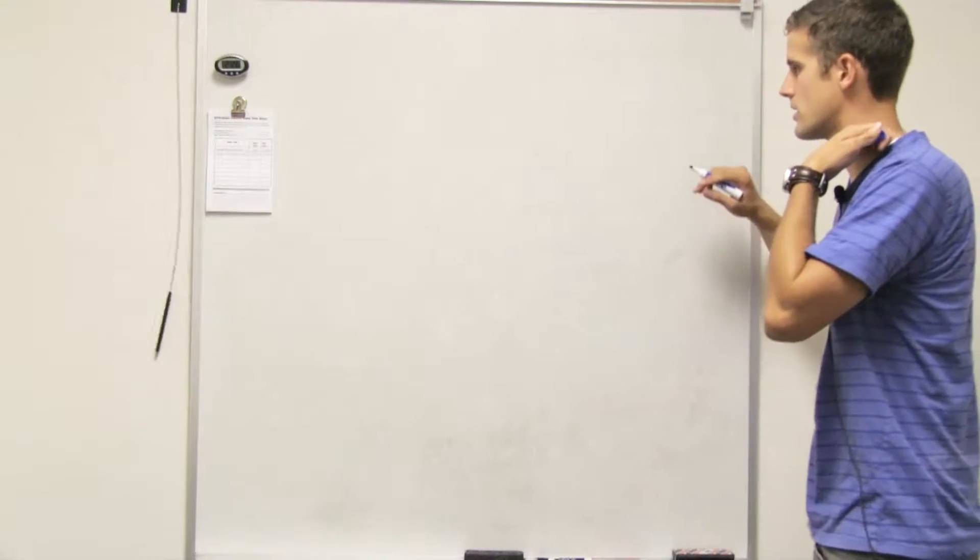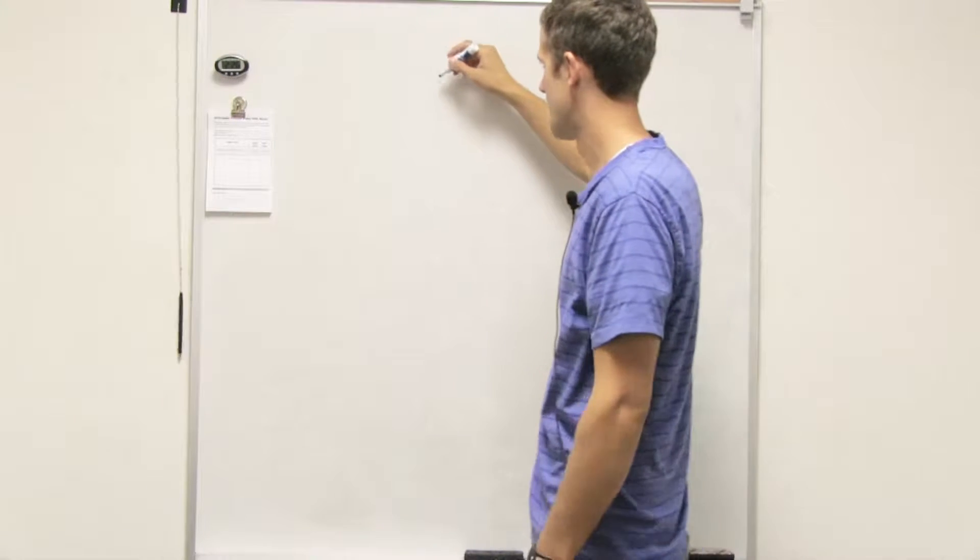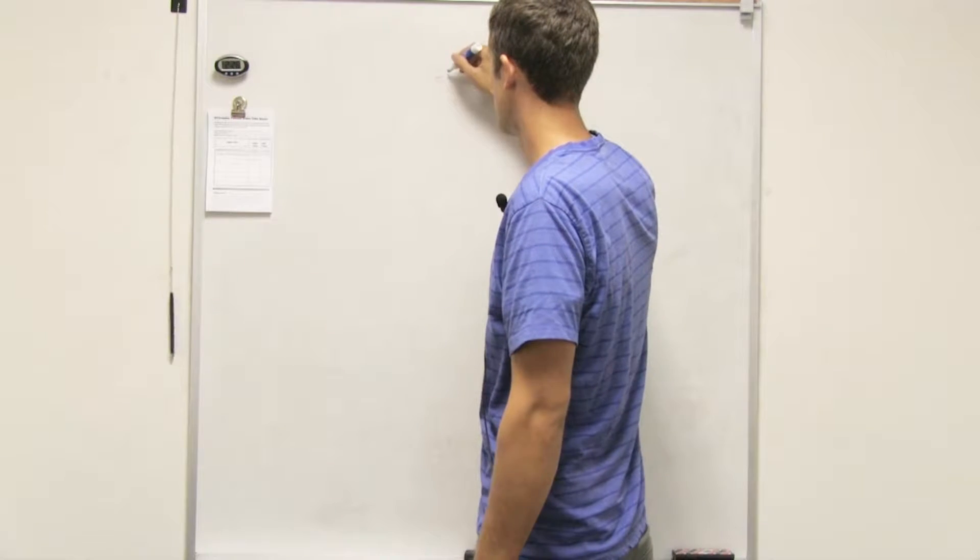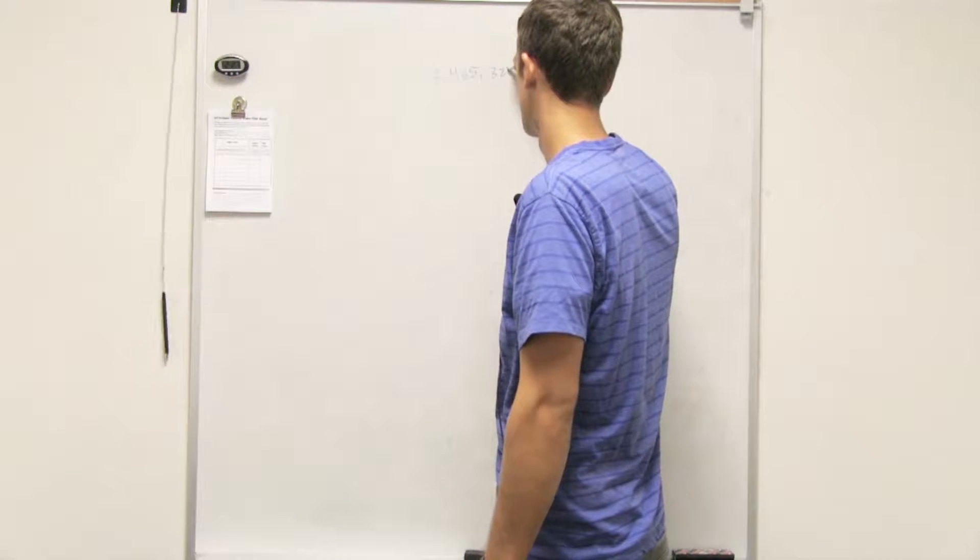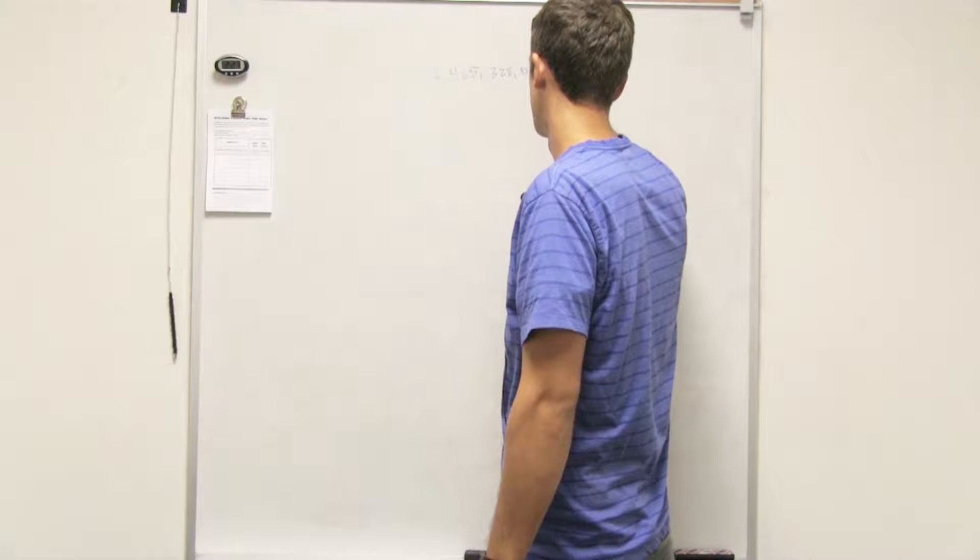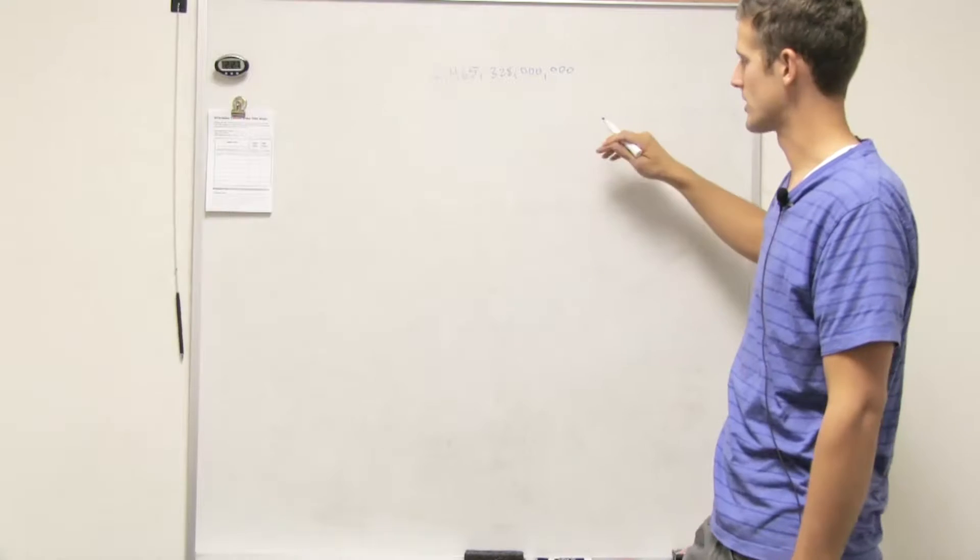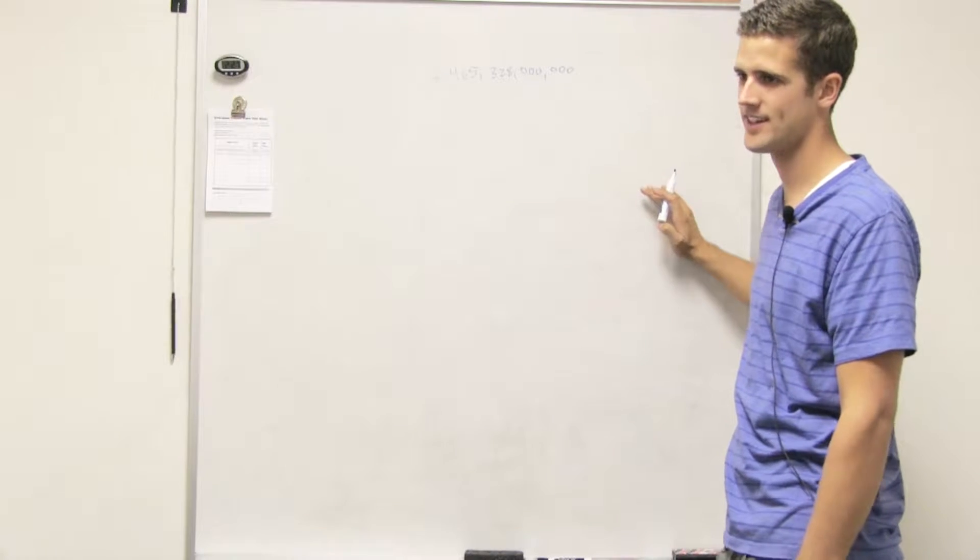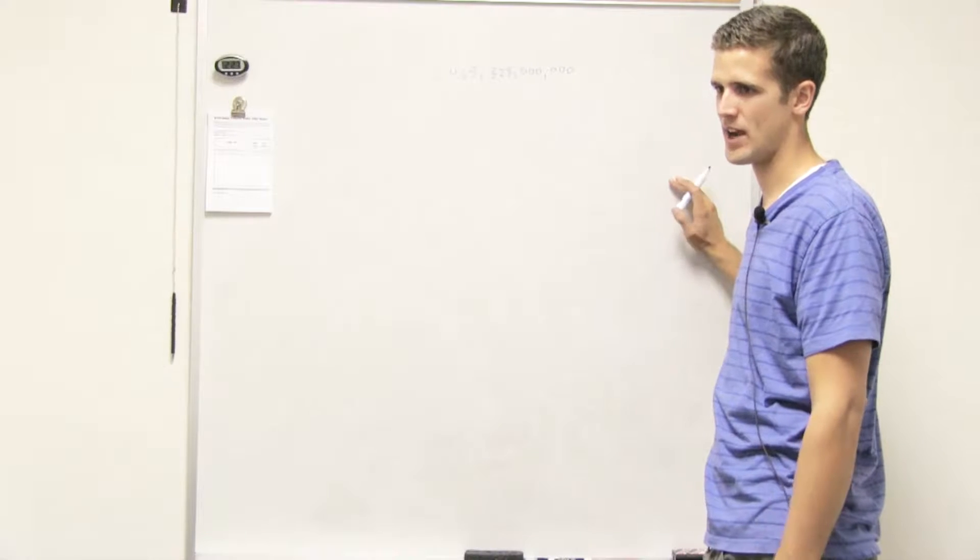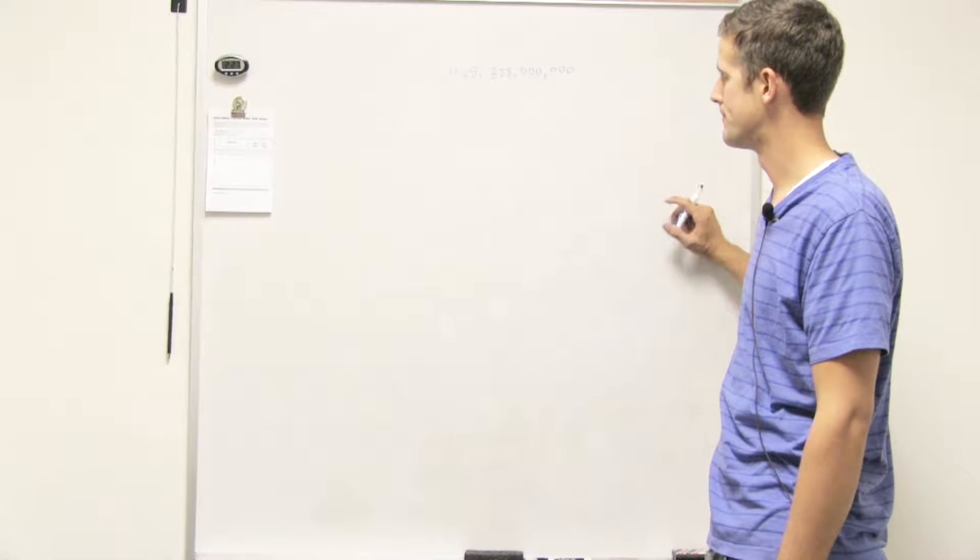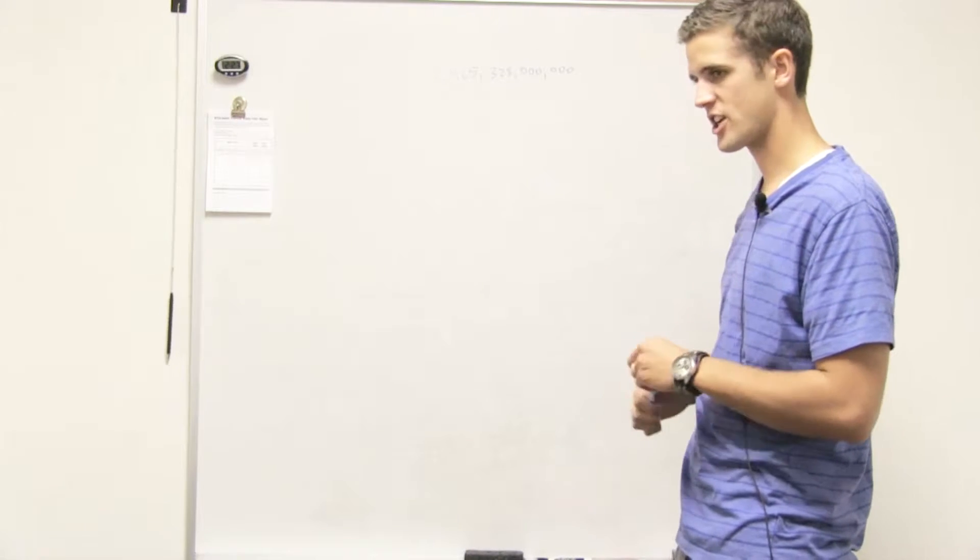All right, so scientific notation is when you have a number that looks like this, and you want to write it somewhere without it looking so horrible. You want to be able to write it in your equations and use it pretty often.